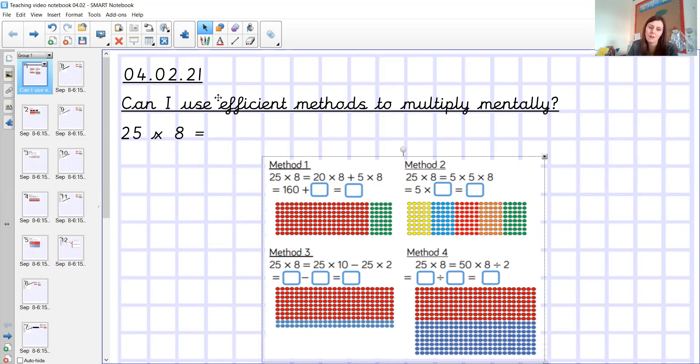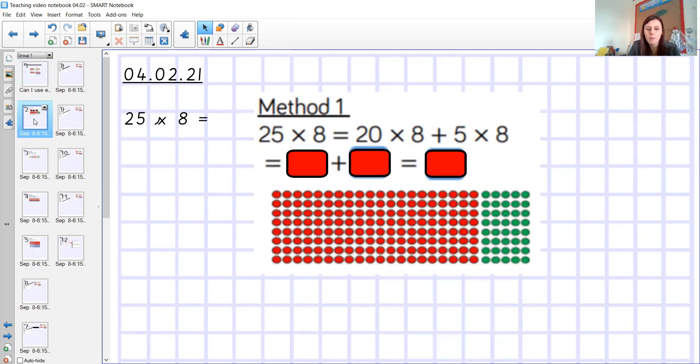So I'm going to have a look at this multiplication first here with you. So 25 multiplied by 8. And you can see here on the screen there are four different methods. So let's have a look at method number one. So what have we done here? We've broken it down, we've partitioned it. So the first thing we're going to do is we're going to do 20 multiplied by 8. So I've drawn an array here, probably going to take you quite a long time to do that. So maybe not the most efficient method.